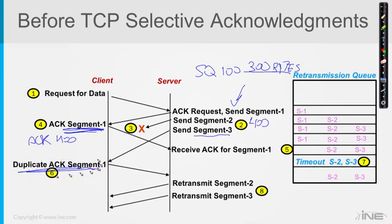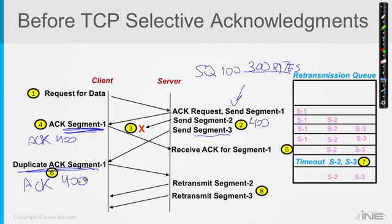When the client got segment number three and noticed a hole, he again ACKs 400 — a duplicate of the previous ACK. Now this is the server's first indication that something is wrong. He already sent segment number two, so why is the client saying he got up to byte 400 and needs what's after that? Clearly, segment number two must not have gotten there.